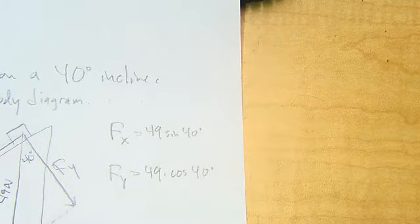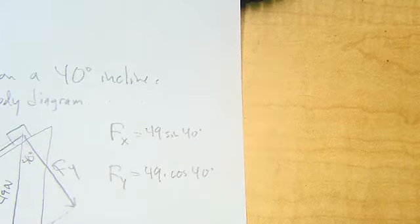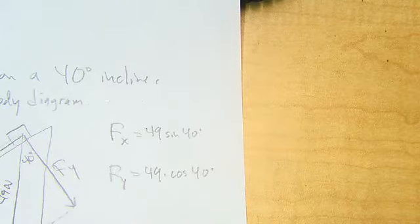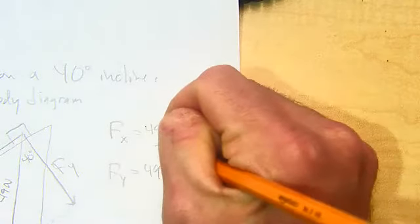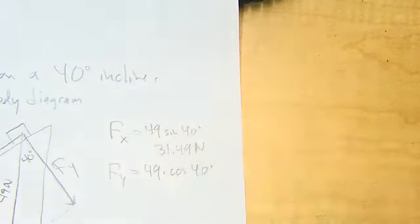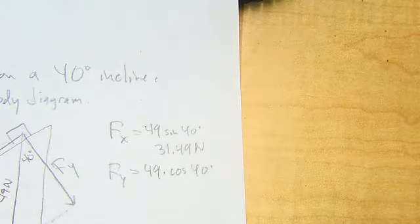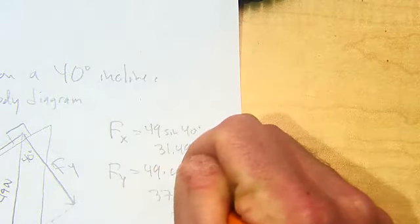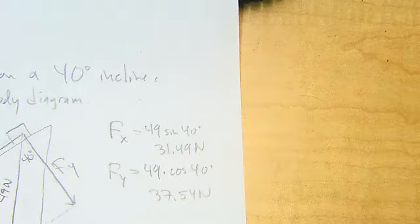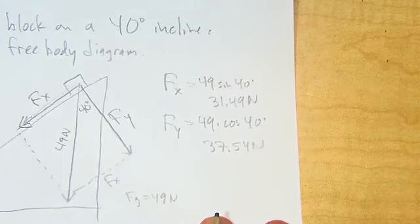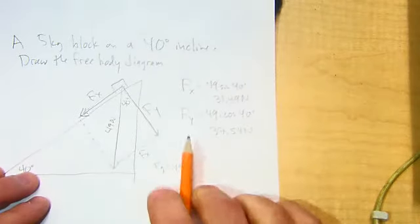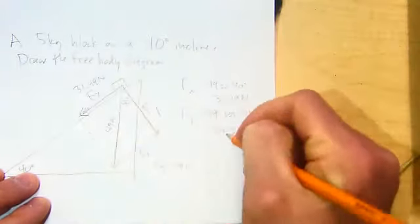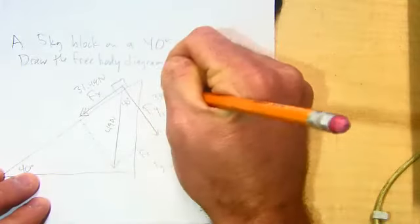Let me grab my calculator. So I'm getting 31.49 here, newtons. And then 49 times cos 40, 37.54 newtons here. So what do we got going on there? The next kind of step here. We did most of the hard work already. This is up here, 31.49 newtons. This goes over here, 37.54 newtons.